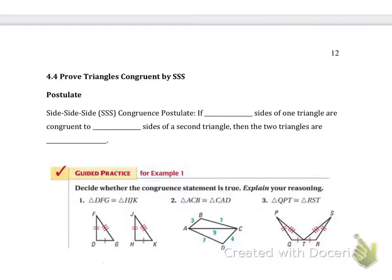Okay, in this video we're going to do the 4.4 notes on proving triangles are congruent by SSS, which stands for side-side-side. The Side-Side-Side Congruence Postulate states that if three sides of one triangle are congruent to three sides of another triangle, then the two triangles are congruent. Note that there's no discussion of angles here. What they're saying is that if we can show that the three sides are equal, that is sufficient to show that the two triangles are congruent to one another.